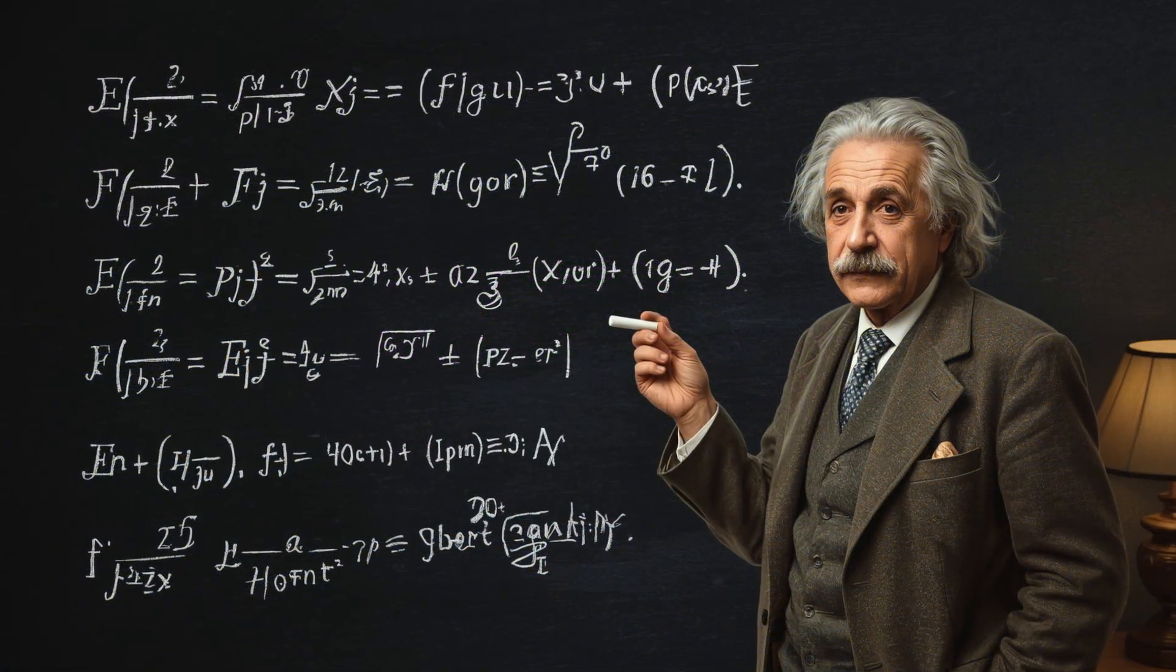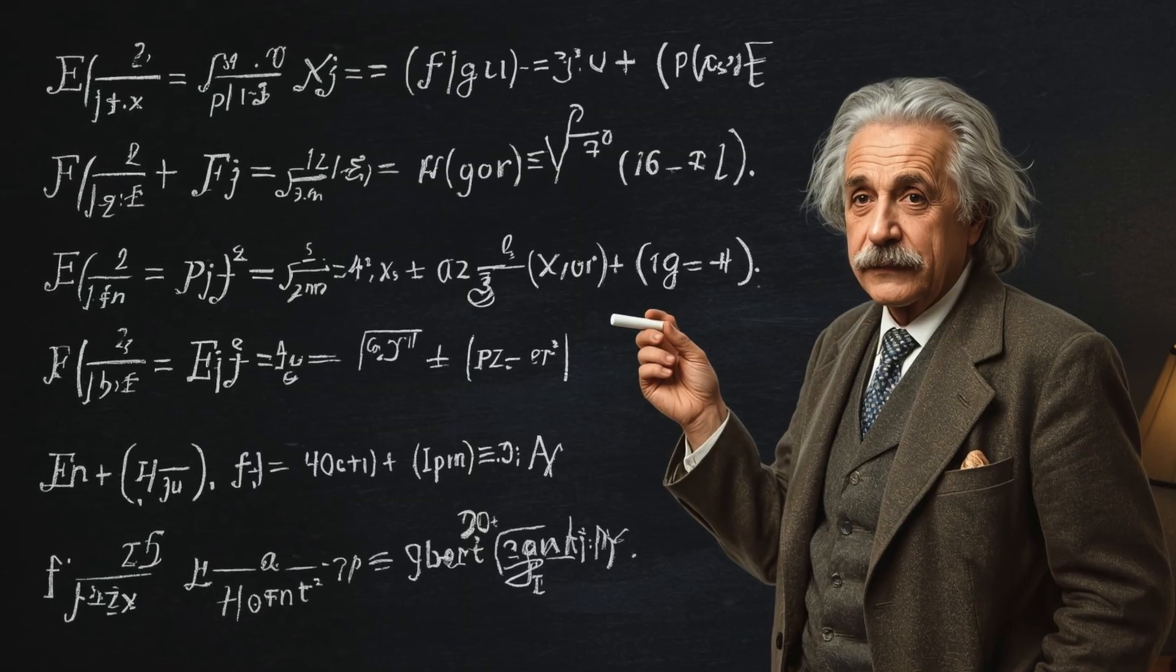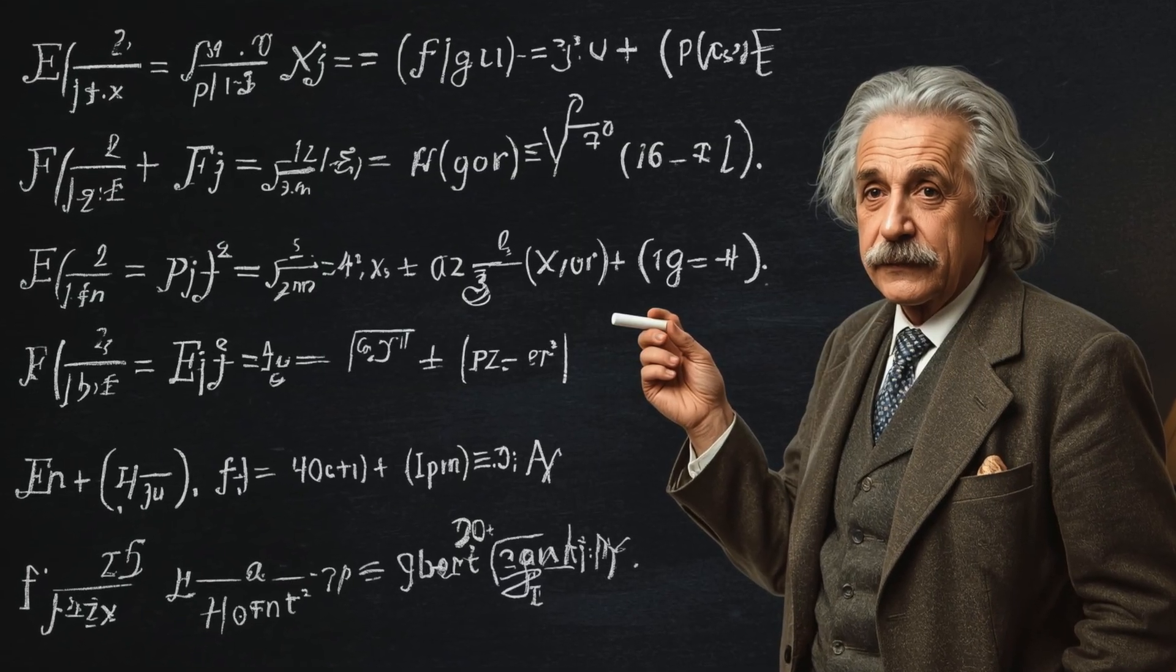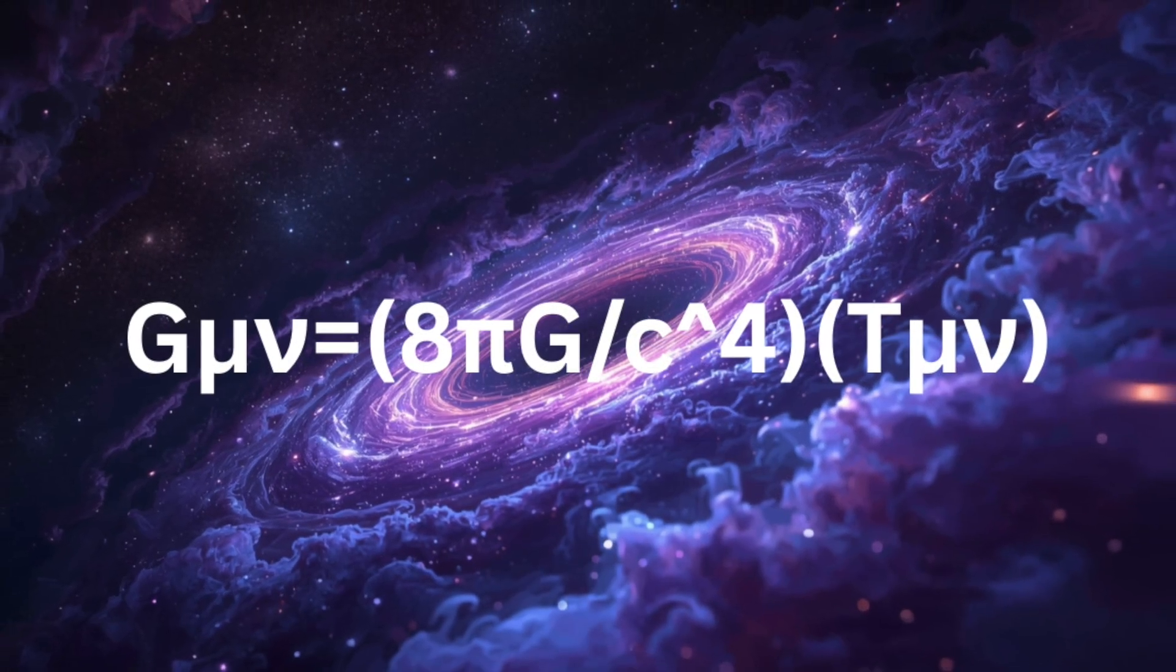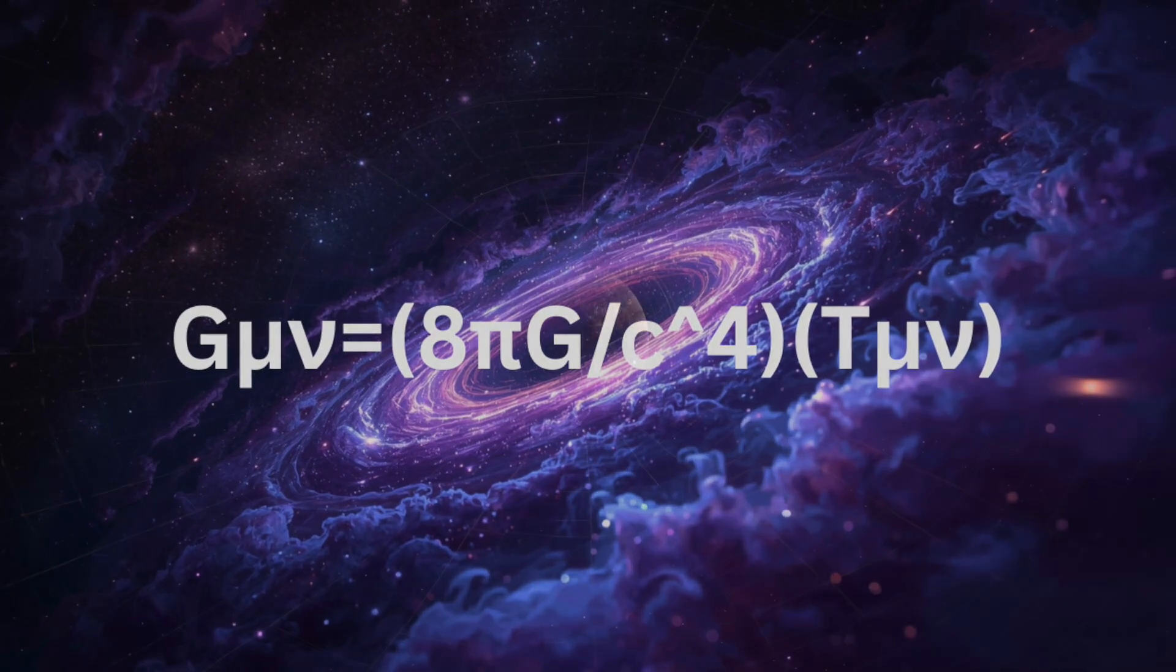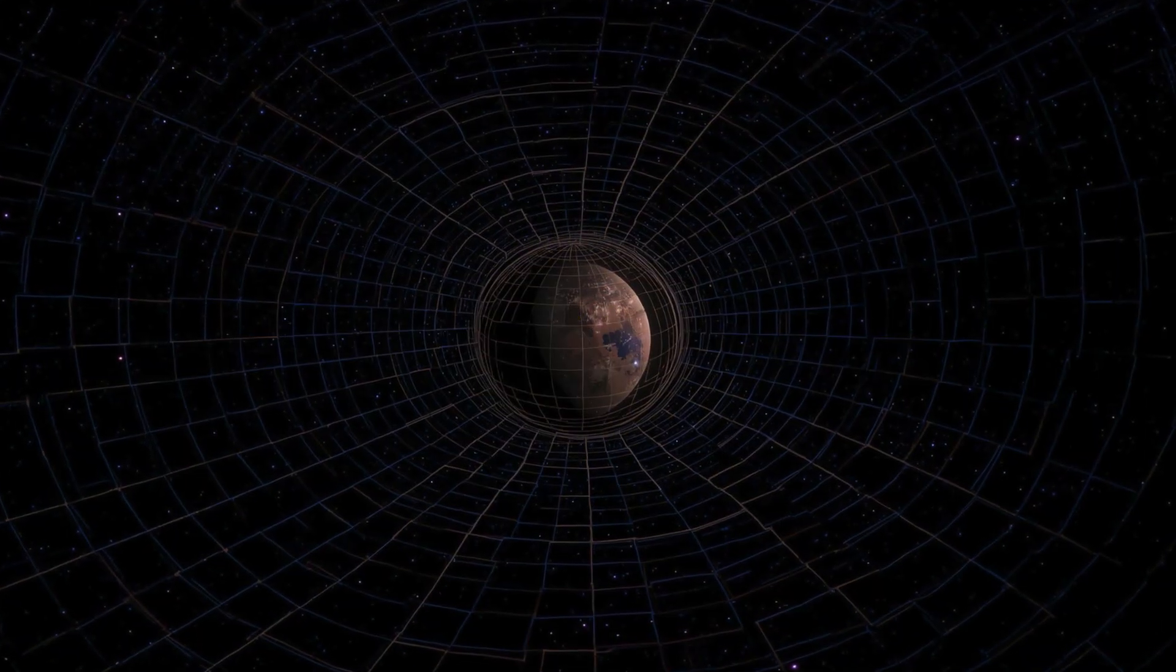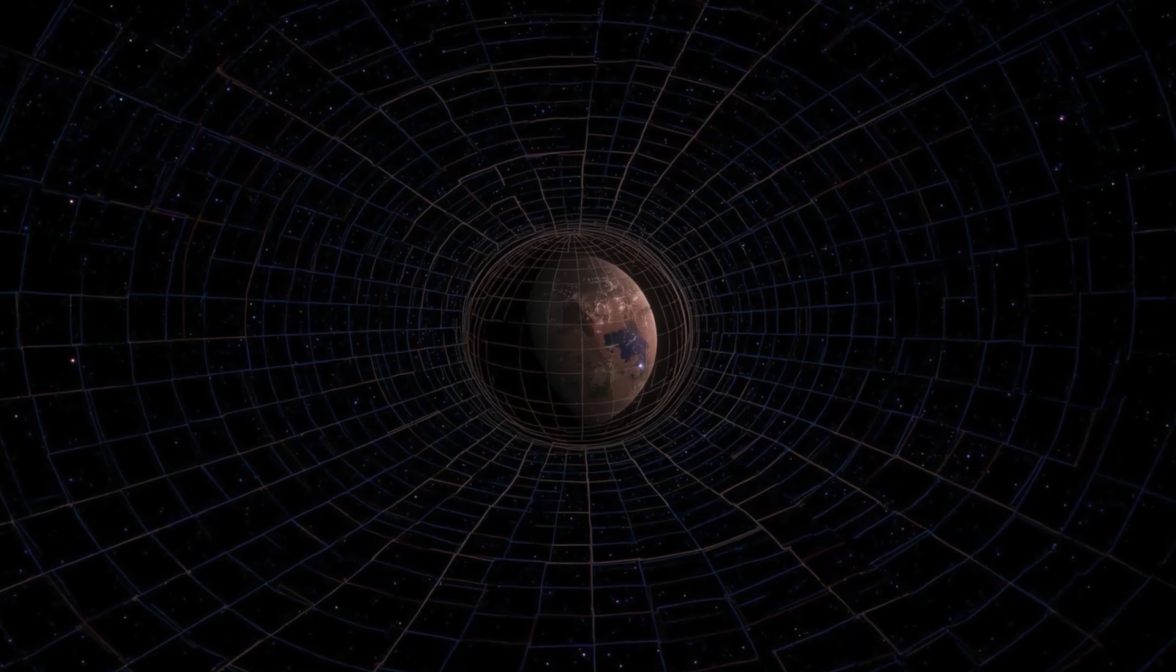In Einstein's field equations, spacetime curvature is expressed through a rank-2 tensor, the Einstein tensor, equating geometry and matter, g_μν = 8πG/c^4 × T_μν. This equation describes how mass and energy tell spacetime how to curve, and how curvature tells matter how to move.